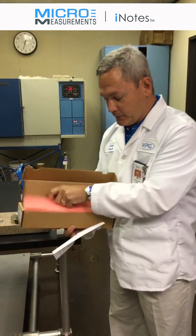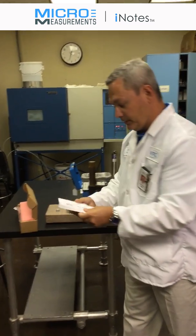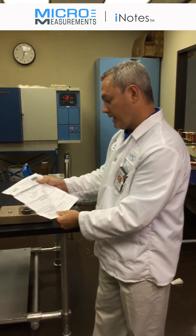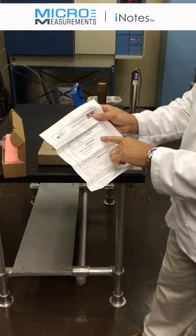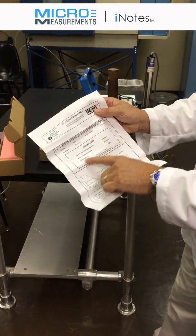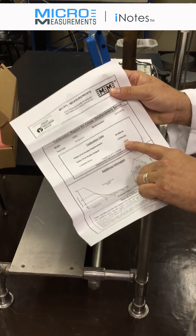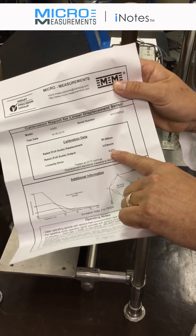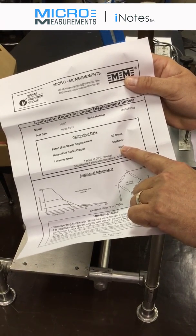In addition, in this box you also have one of our calibration data sheets. On this calibration data sheet, you'll find the full rated displacement as well as its rated output at that full displacement. Along with that, you'll also see its linearity error, and that's one of the advantages to using these HS series sensors—they have a very nice linear region. In this particular case, 0.21 percent.